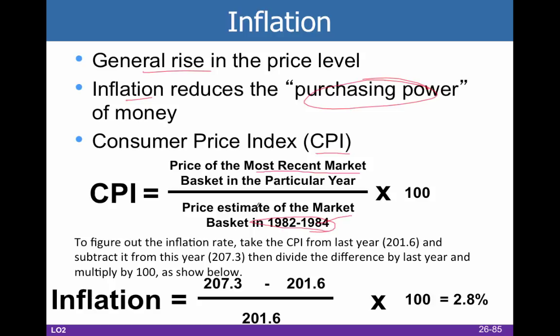There's a market basket — the base year was an average of 1982 to 1984. You take the current year, divide it by the base year, multiply times 100, and that gives you a number. So let's say the number for this year is 207.3, and the number for last year was 201.6. You do 207.3 minus 201.6 to get the difference in the index, then divide by last year, and that tells you — once you multiply by 100 — what your inflation rate is.